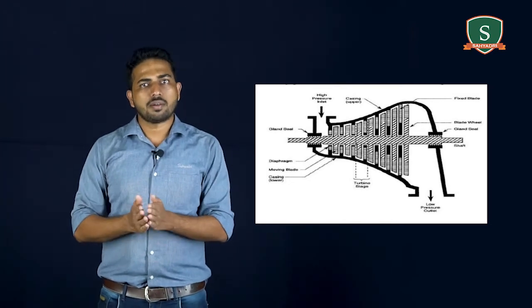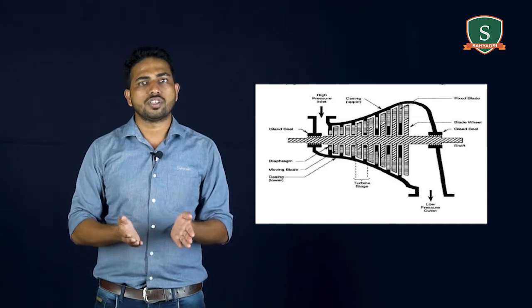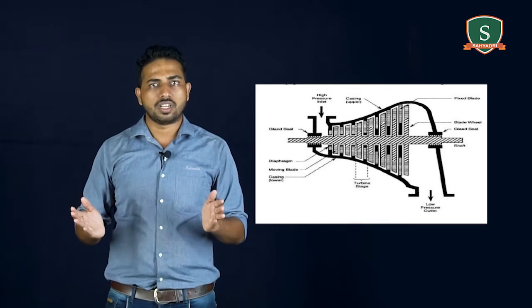Example, power absorbing machine possess only input shaft. Power generating machine possess only output shaft. Power transmitting machine possess both input and output shaft.